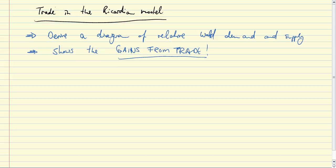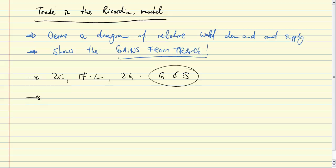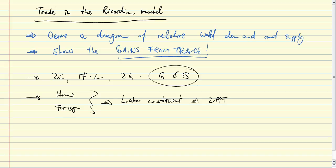We have two countries, each with one factor which is labor, and two goods which we'll call guns and butter. We have in both countries, which we'll label home and foreign, our labor constraints which give us two PPFs. This discussion complements the standard presentation of the gains from trade from comparative advantage in the two-country, two-sector, one-factor world with production possibility frontiers.